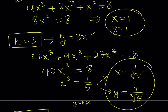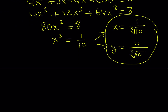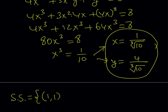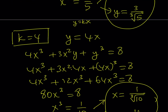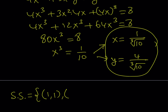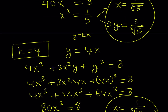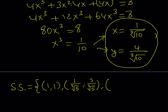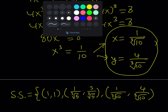Since we had 3 different values for k, we get 3 different ordered pairs as solutions. The complete solution set is: (1, 1), (1/∛5, 3/∛5), and (1/∛10, 4/∛10). You could rationalize the denominators if desired. And that concludes our video.